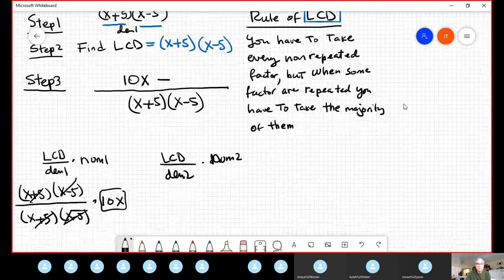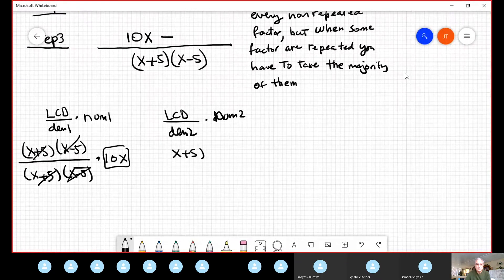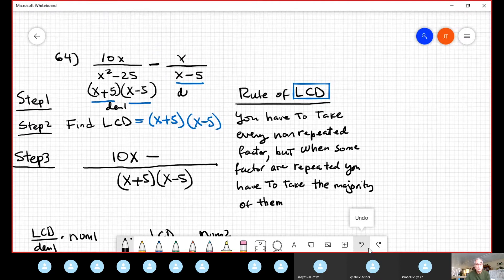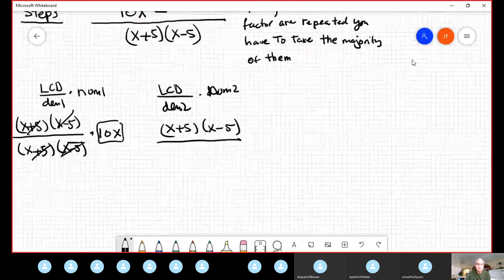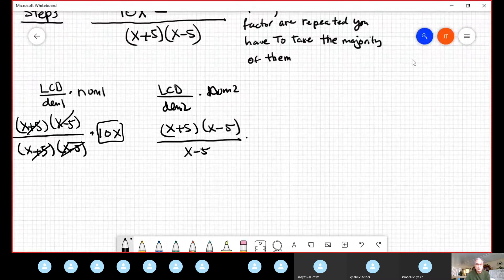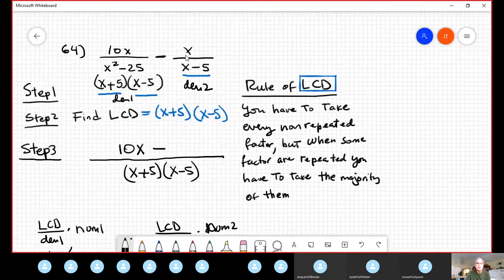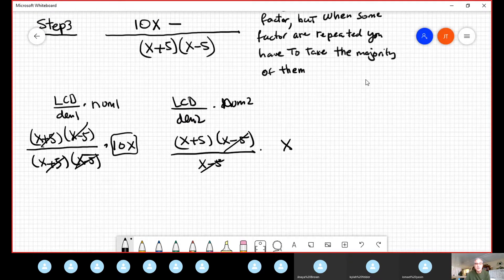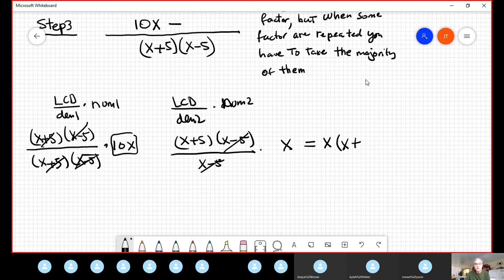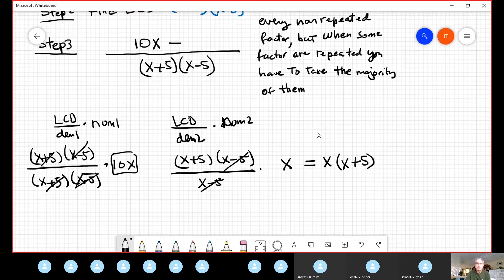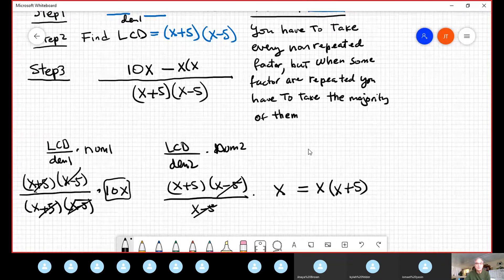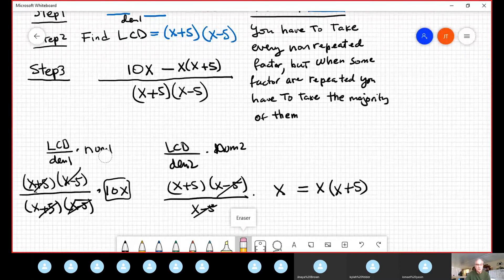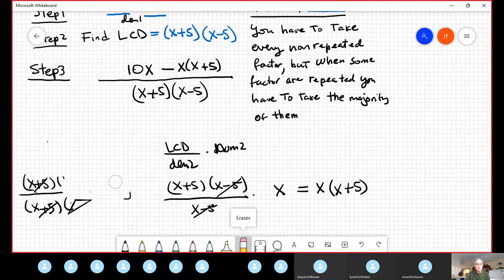Now, in the second part, you divide LCD again. It's x plus five, x minus five, divided by denominator two. But who is denominator two? This is denominator two. Denominator two is just x minus five. Multiplication times numerator two. Numerator two, in our example, is just x. Now, this is cancelled. And it stays alive, only x. This x times x plus five. Yeah, I copy. Just copy that. I copy. x times x plus five. Everyone follow me so far? Yes. Look like understandable, no?